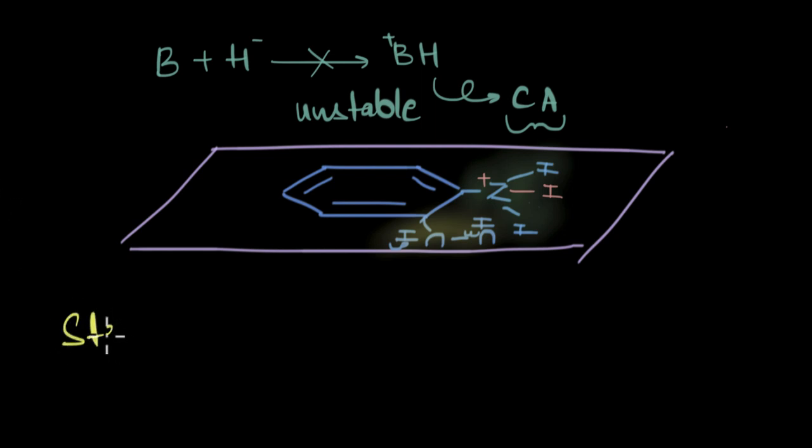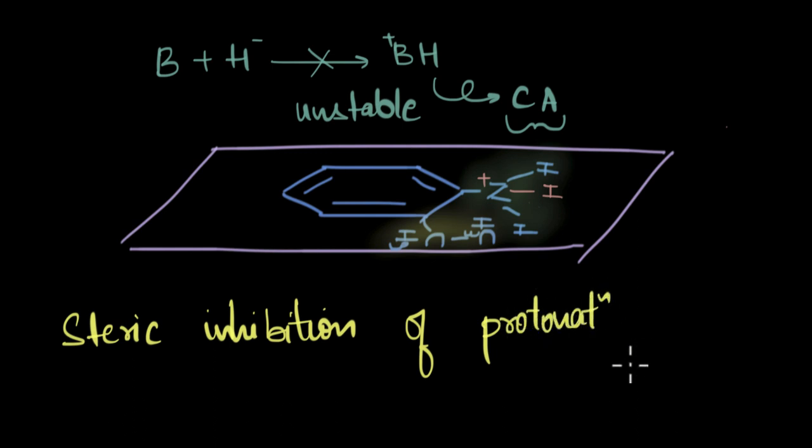This is called steric inhibition of protonation. Steric inhibition of protonation decreases the basicity. So essentially, the basic strength of this molecule will be even lesser than an aniline molecule.